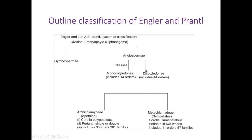This division embryophyta is divided into two subgroups: gymnosperms and angiosperms. Before the classification of Engler and Prantl, in the example of Bentham and Hooker, gymnosperms were placed in between the dicots and monocots. But after Darwin's theory, in all phylogenetic classification systems, they completely separated this group. Gymnosperms means the naked-seeded plants in which there is no fruit formation.